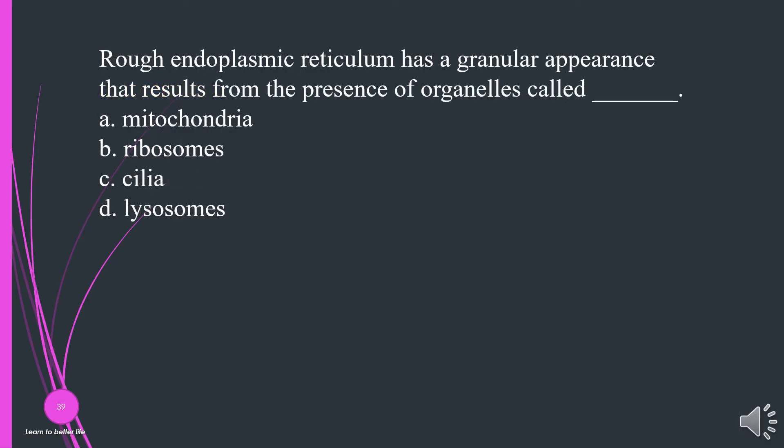Rough endoplasmic reticulum has a granular appearance that results from the presence of organelles called what? A. Mitochondria. B. Ribosomes. C. Cilia. D. Lysosomes. The answer is B, ribosomes.